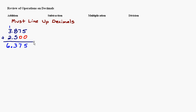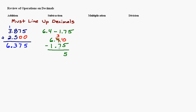The same thing is true for subtraction — you have to line up your decimals. Let's do 6.4 minus 1.75. We line up the decimals and put a zero in the empty spot, giving us 6.40. We can't take 5 away from 0, so we borrow from the 4, making it a 3, and 10 take away 5 is 5. Then 3 take away 7 requires borrowing again: 13 take away 7 is 6. Bring the decimal straight down, and 5 take away 1 is 4. The answer is 4.65.